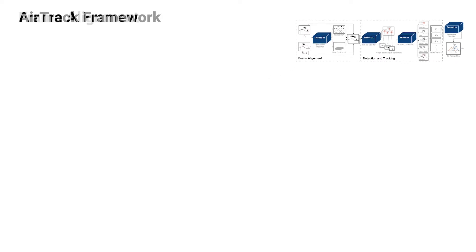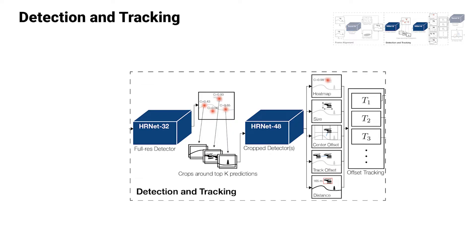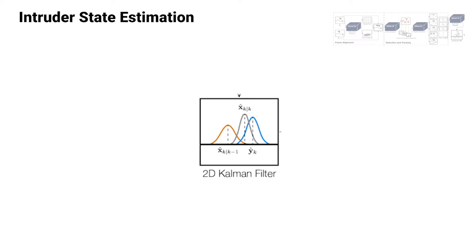First, two full-resolution images are aligned with a deep learning-based optical flow module to remove ego motion. The aligned images are then used downstream in cascaded primary and secondary detectors to improve detection performance on multiple metrics. The detection and tracking metrics are used in an offset tracking module, which gets fed into a secondary classifier for false positive rejection. The final offset tracks are used in a 2D common filter for final target state estimation.